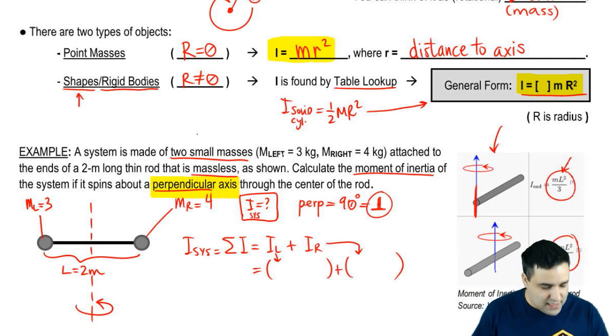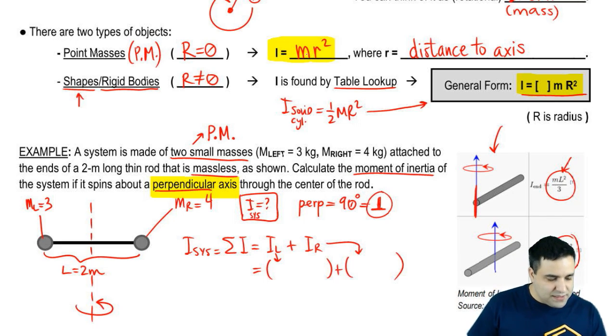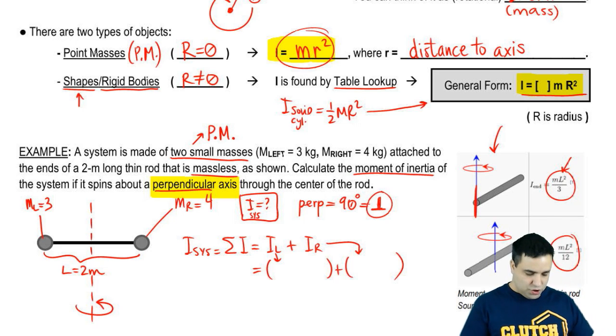Small is a hint that these are point masses, PM, point masses, PM, which means the equation is MR squared.